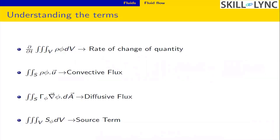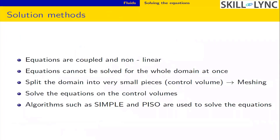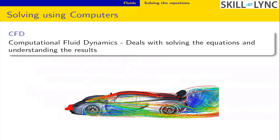These equations are complex, coupled, and non-linear — they contain second-order differential terms and cannot be solved for the entire domain at once. We split the domain, called the computational domain, into small chunks called control volumes, and this process is called meshing. Meshing is critical in CFD because it determines result quality. We then solve the equations on these control volumes using algorithms like SIMPLE and PISO. Since this requires computers, this is where computational fluid dynamics comes into play.